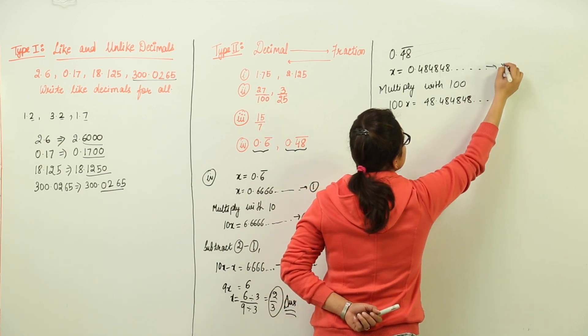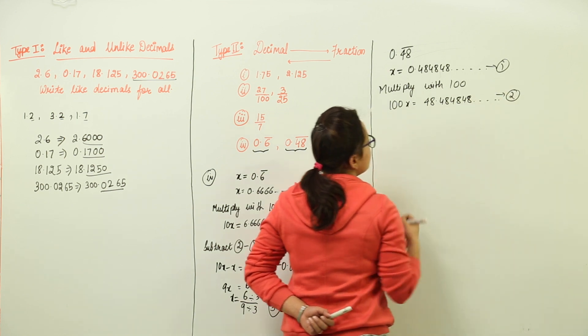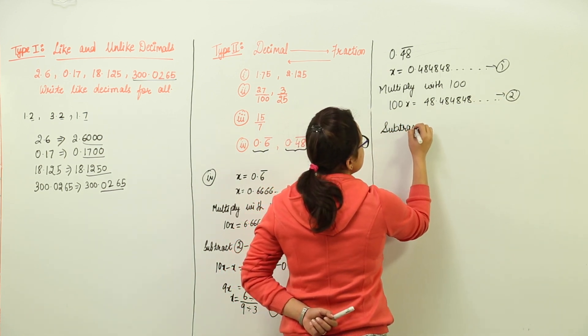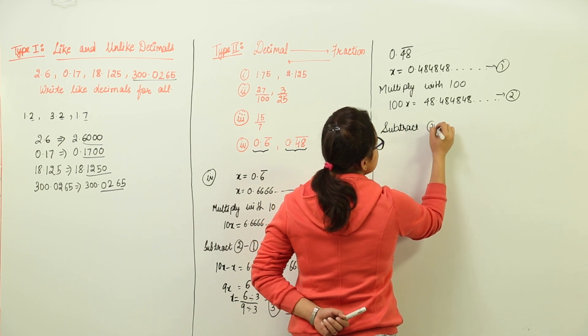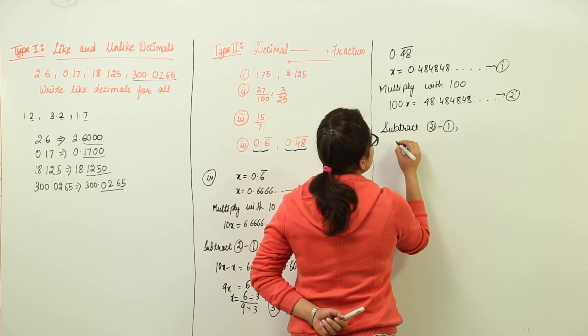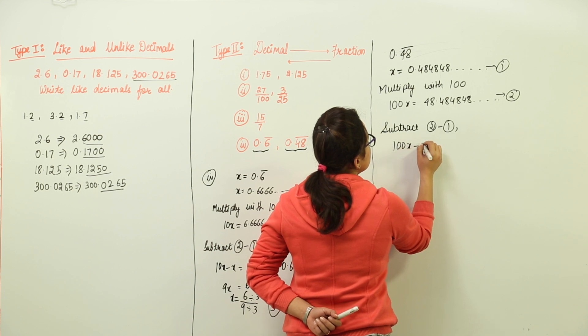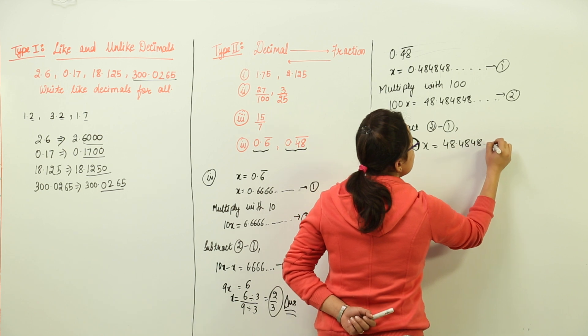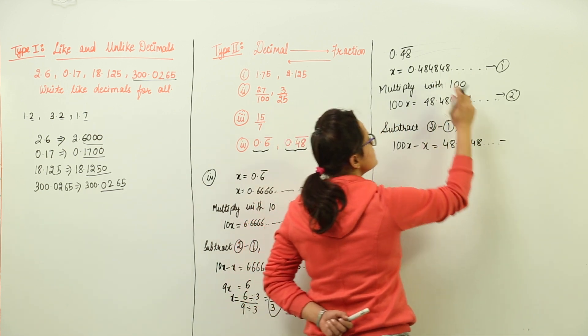So this is the first equation that we had. And this has become our second equation. On subtracting both, that is subtracting the first equation from the second one, we would get 100x minus x. That would be equal to 48.4848 and so on minus the right hand side that was 0.4848 and so on.